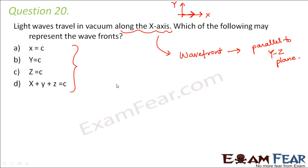If you look at the first option, x is equal to c. That means x is equal to some constant — the value of x is constant with time. So basically x = c would be a graph which is parallel to the yz plane. As you can see here, this line is parallel to the y-axis. So this may represent the wavefront because x = c is a line parallel to the yz plane.